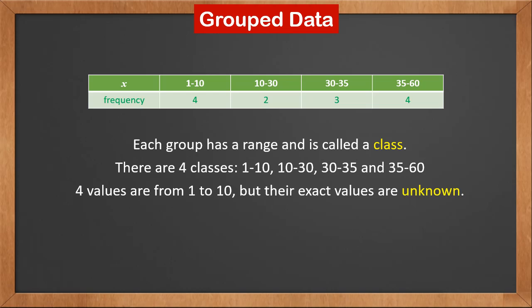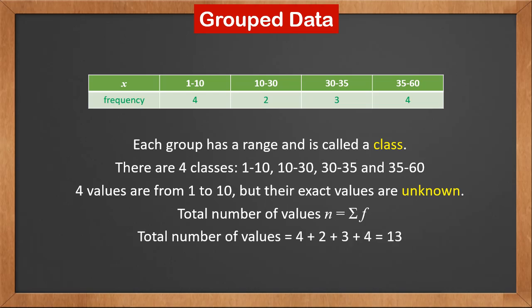We know there are 4 values from 1 to 10, but we don't know their exact values. The total number of values, n, is still sigma f, and it's 13 for this dataset.